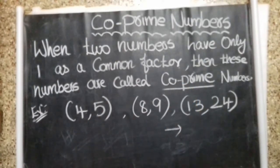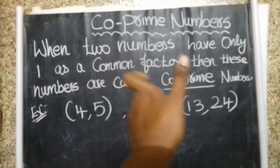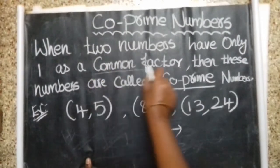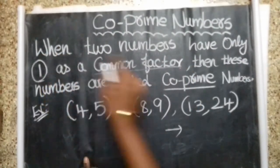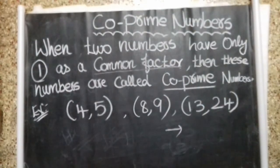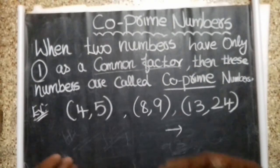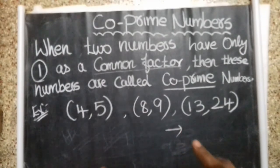When two numbers have only one as a common factor, then these numbers are called co-prime numbers. To check, find the factors of each number, then find the common factors. If the only common factor is number 1, then these numbers are called co-prime numbers. Thank you for watching this video.